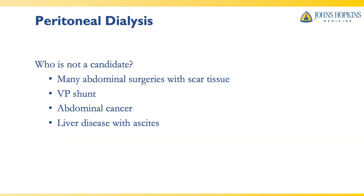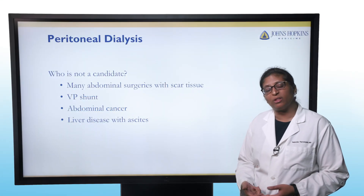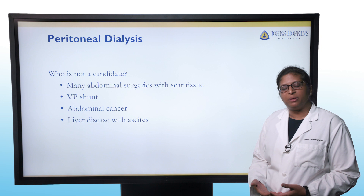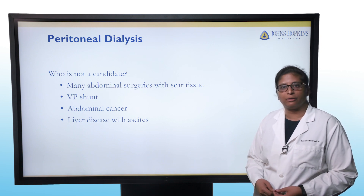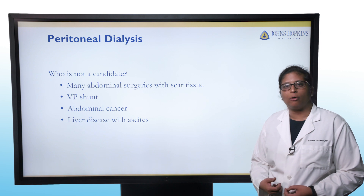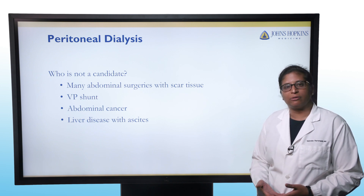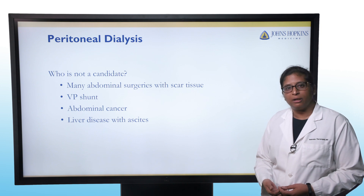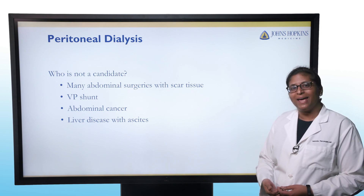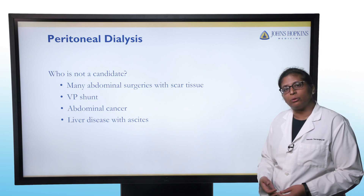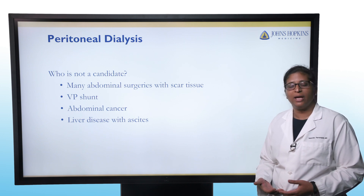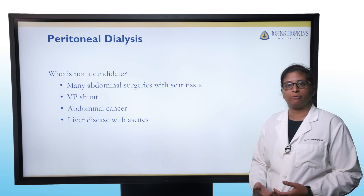Who is not a candidate for peritoneal dialysis? If someone has had a lot of abdominal surgeries, they may have developed scar tissue in the abdominal wall that prevents appropriate blood filtration. If they have a VP shunt — placed to drain excess brain fluid — that could get infected on peritoneal dialysis. If they've had abdominal cancer, there's a risk of spreading cancer cells, so peritoneal dialysis is generally not allowed in those settings. Finally, if someone has liver disease where they're already building up fluid called ascites, they may not tolerate having more fluid in the abdomen for peritoneal dialysis.